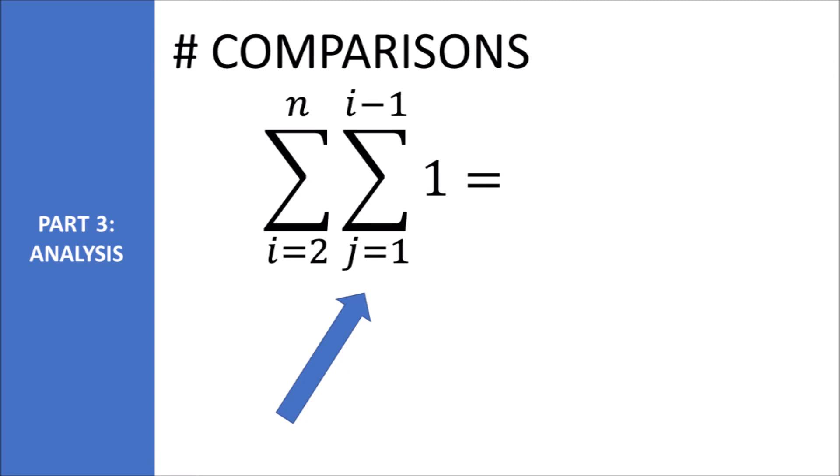We then iterate through the outer loop. We add the number of comparisons in the inner loop for each outer loop. The inner loop iterates through all the elements before i, so it runs i-1 times.